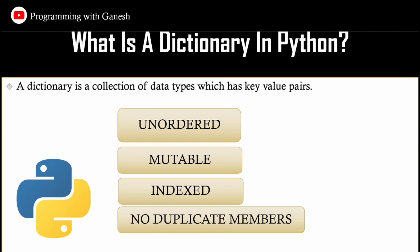In a list you access values by indexing, but in a dictionary we access through a key — we can give any key and a value to that key. Features of a dictionary: it is unordered (order is not fixed), it is mutable (you can update, add, or delete elements), it is indexed by key, and it has no duplicate members — duplicate values are allowed but duplicate keys are not.